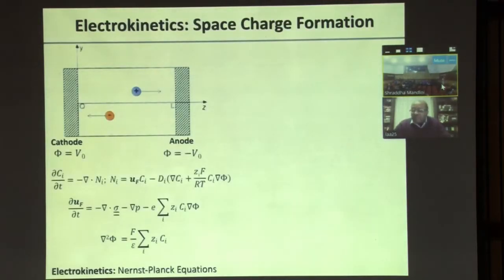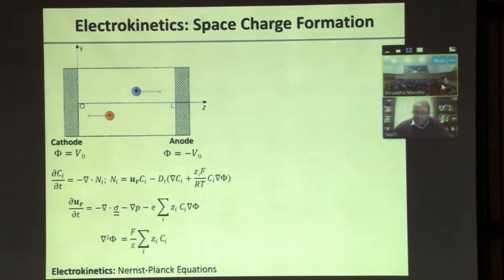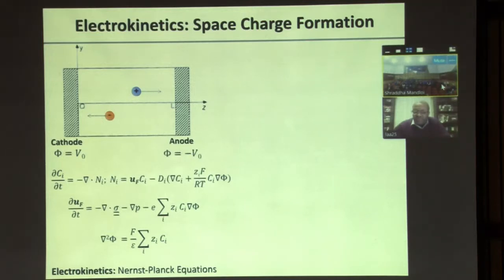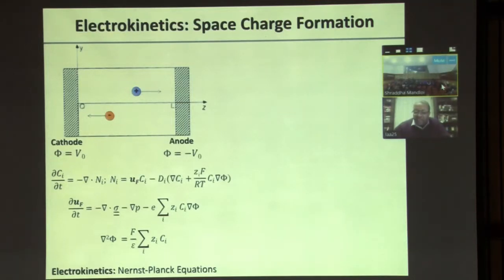The starting point is basically the starting point for electrokinetics, where one has an electrolyte between two electrodes. In this example, the electrodes are held at potentials V0 and minus V0. The electrolyte is assumed to be dilute, binary, and monovalent. In such a situation, the equations are relatively straightforward: conservation of mass, the momentum equation, and the Poisson equation indicating everything happens in an electric field. These are the so-called Nernst-Planck equations.